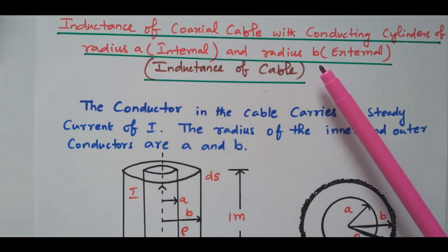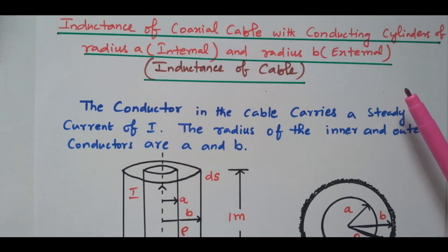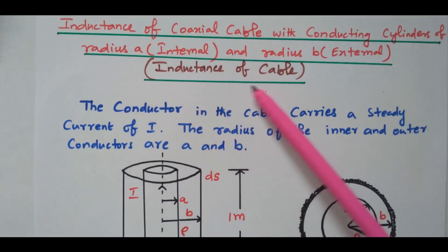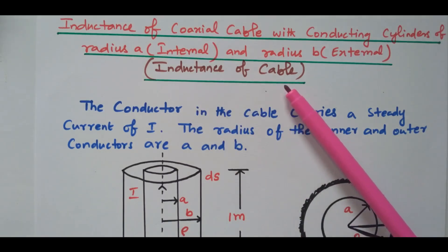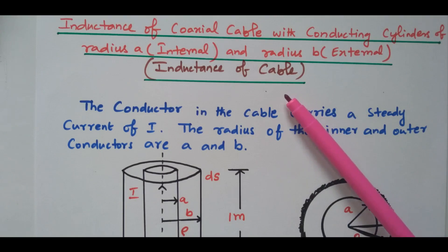This underground cable has two conductors A and B, by which we can transmit single phase power — one conductor is used for phase and another for neutral. Simply, we can take the inductance of a cable, referring to an underground cable. Overhead cable has a separate derivation. This refers to an underground single phase coaxial cable.